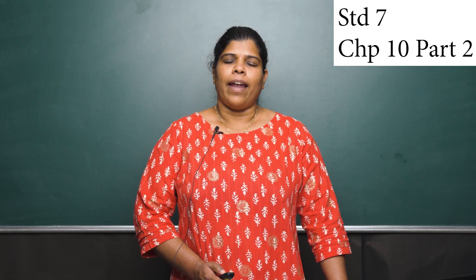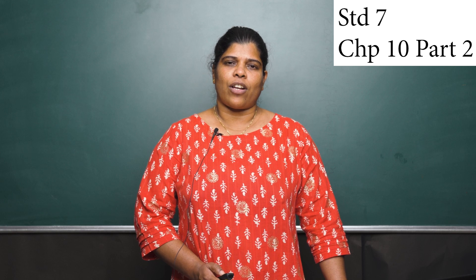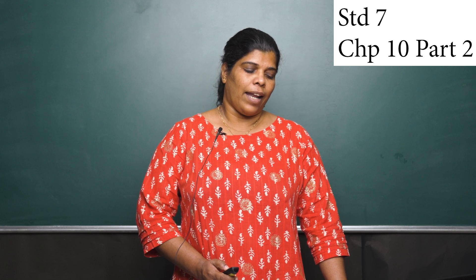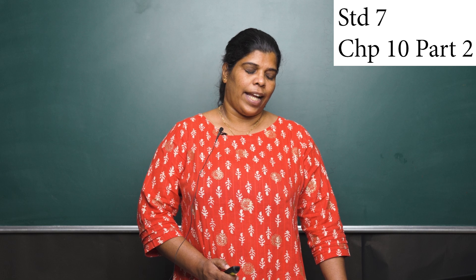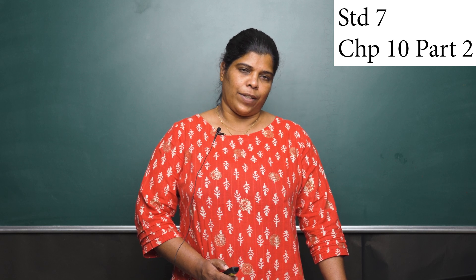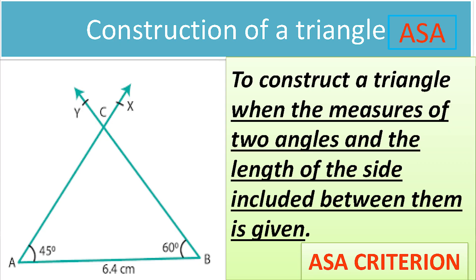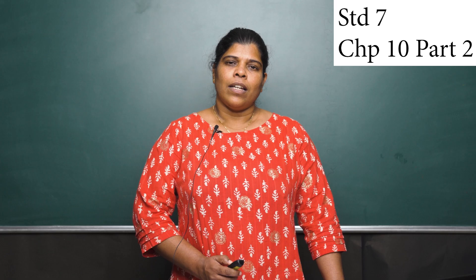Let us proceed with the next construction: to construct a triangle when the measures of two angles and the length of the side included between them is given. If you see the figure, the measures of two angles and the length of one side are given, so it becomes the ASA criterion.